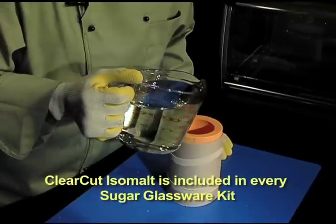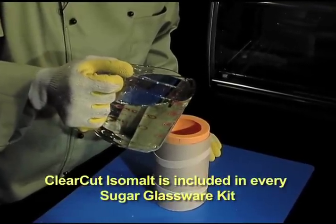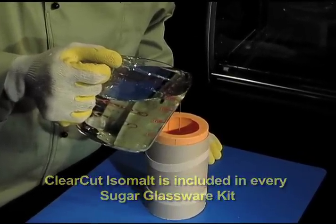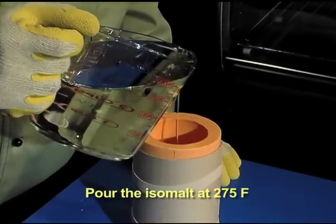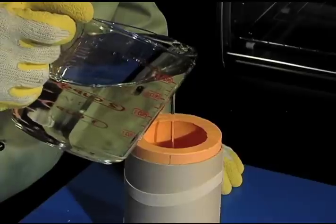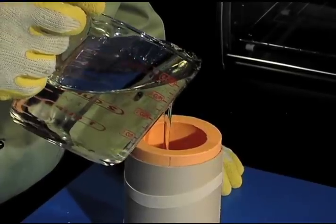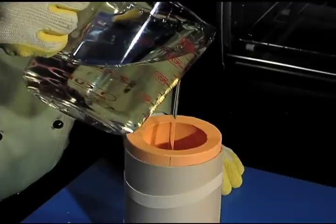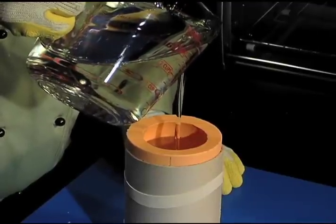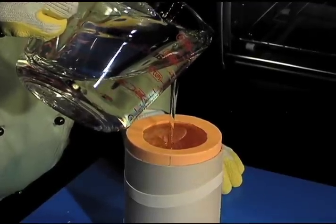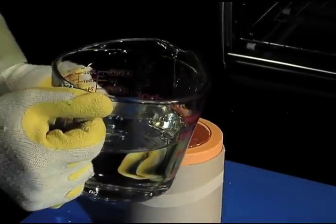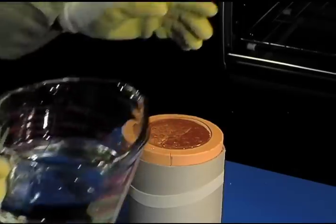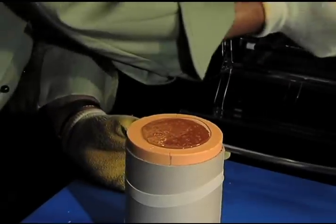To make a sugar wine glass, fill the mold with clear cut isomold that has been tempered to 275 degrees Fahrenheit. Pour the isomold in a thin stream to start and needle it down into the small hole in the bottom of the mold that represents the stem of the glass. Once this portion of the mold has been filled, increase the pour rate to fill the larger volume of the glass mold in a timely manner.